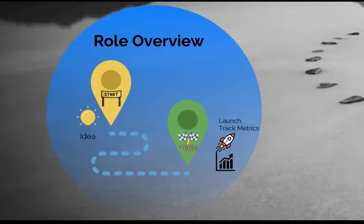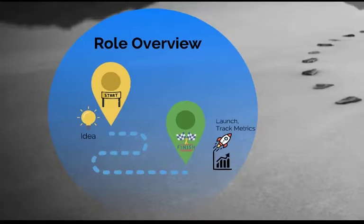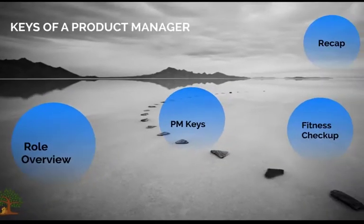A product manager, aka PM, owns the product right from the start to the finish. In the PM journey, the starting point is the idea inception phase and the ending point is the product rollout and tracking success metrics to make improvements. Now let us go over the five PM keys.